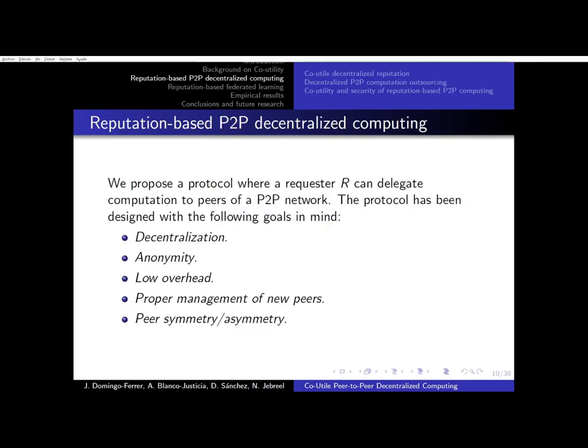In our proposal, a requester can delegate the computation of some tasks to the peers in a peer-to-peer network. The protocol is designed with the following goals. First, decentralization: the protocol should not rely on a central authority who might, in some cases, be self-interested. Then, anonymity: requests, computations, and accountability management do not rely on the identities of peers, so that we can thwart collusions.